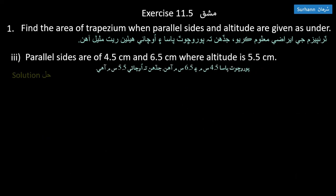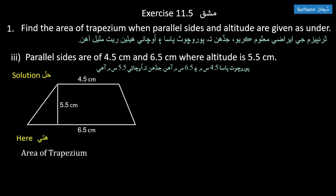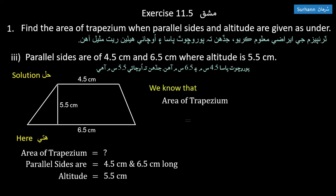Part three: parallel sides are 4.5 centimeters and 6.5 centimeters where altitude is 5.5 centimeters. Area of trapezium equals one-half times altitude times sum of parallel sides. Using the formula, area equals one-half times 5.5 times (4.5 + 6.5).